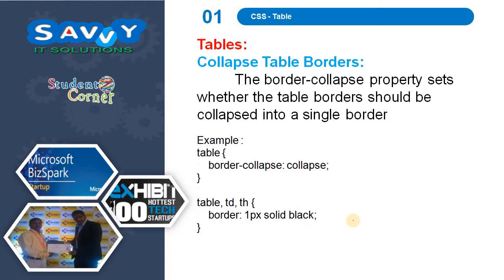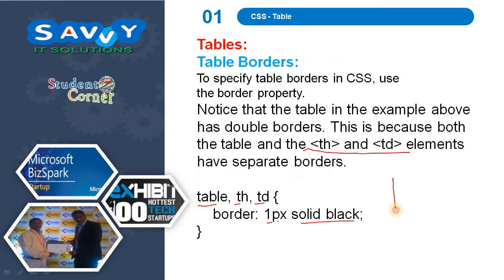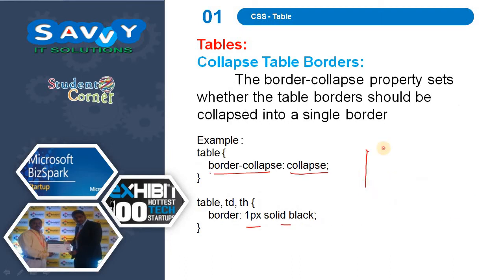The second one is collapsed table borders. The border-collapse property sets whether the table border should be collapsed into a single border. In the previous example, we made the table appear with double borders, and in the present example the table appears with a single border. That is the change between both. Collapse is the best option to make a single line.